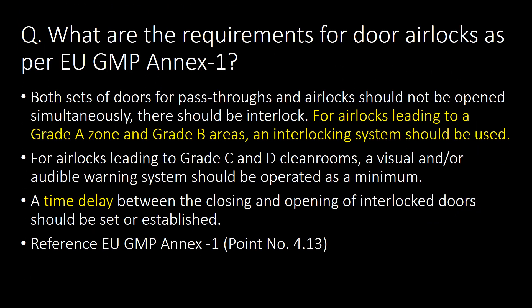What are the requirements for door airlocks as per EU GMP Annex 1? Both sets of doors for pass-throughs and airlocks should not be opened simultaneously — there should be an interlock. For airlocks leading to Grade A zone and Grade B areas, an interlocking system should be used. For airlocks leading to Grade C and D clean rooms, a visual and/or audio warning system should be operated as a minimum. A time delay between the closing and opening of interlocked doors should be established. Reference: EU GMP Annex 1, Point No. 4.13.